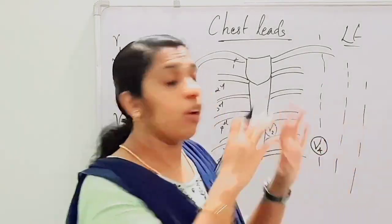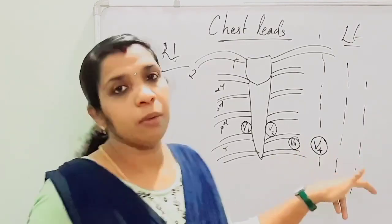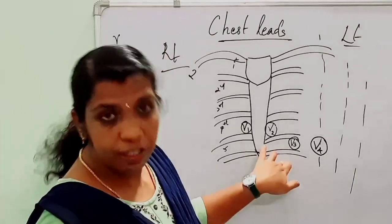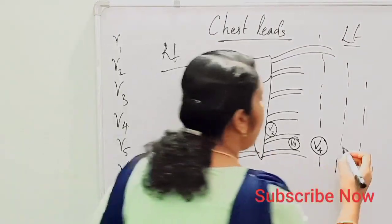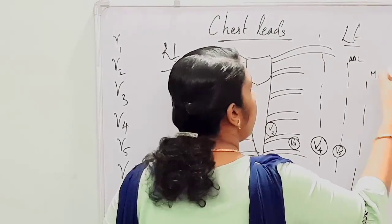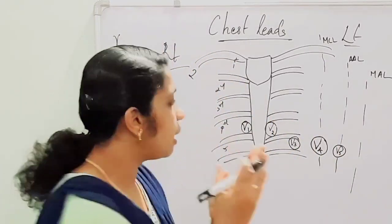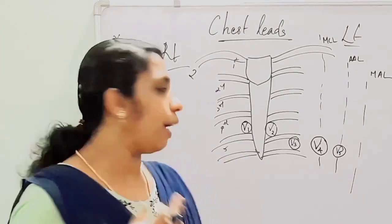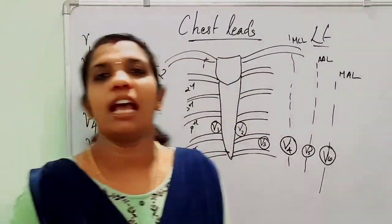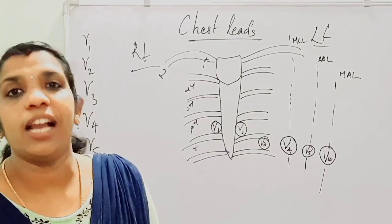For better understanding, I am drawing with more space — in a normal human being the chest leads will be placed much closer together. Next is V5, which is placed in the left fifth intercostal space in the anterior axillary line. And V6 is placed in the left fifth intercostal space in the midaxillary line. So these are the positions of the chest leads in a standard 12-lead ECG.